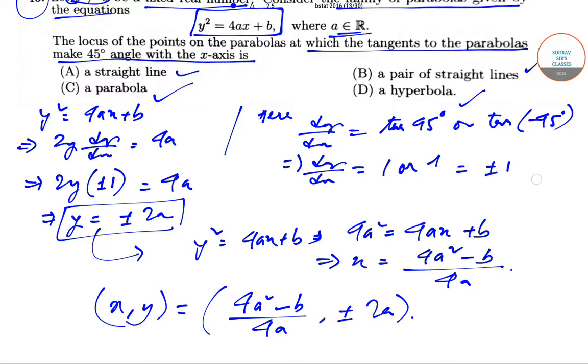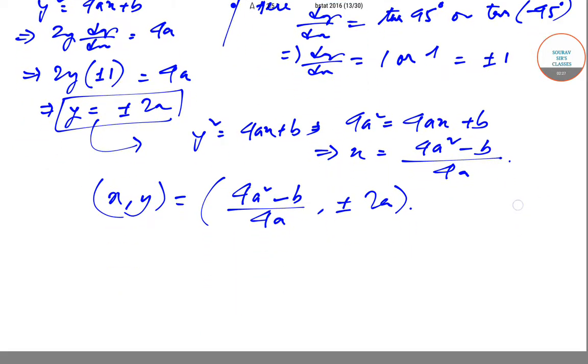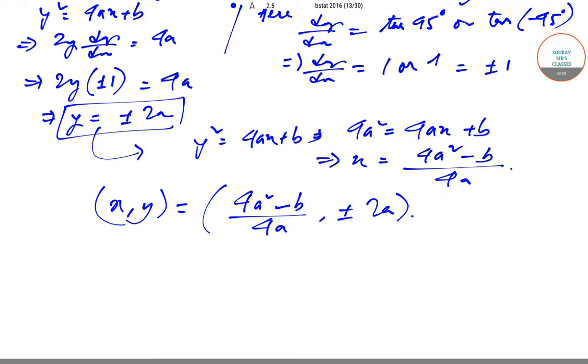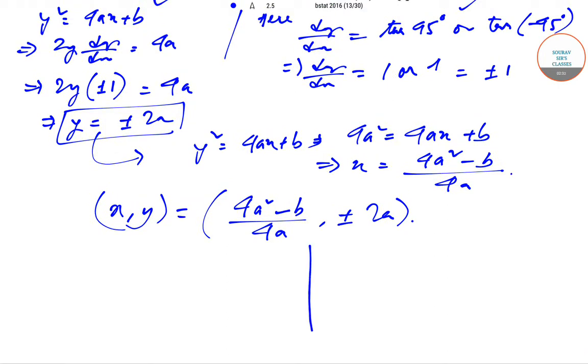So basically, if graphically we want to show it, we can show it like this. This is the y-axis, this is the x-axis, so y² = 4ax + b will be given by somewhat like this.